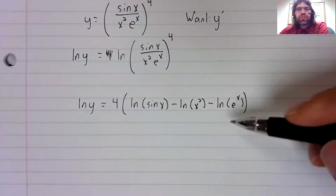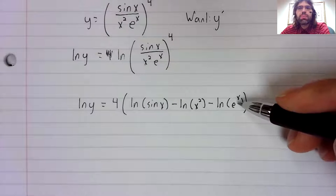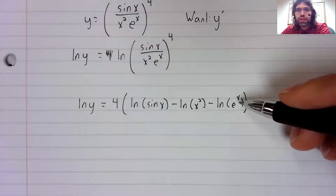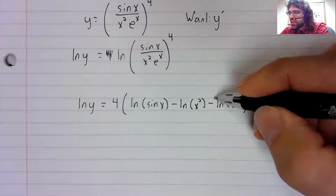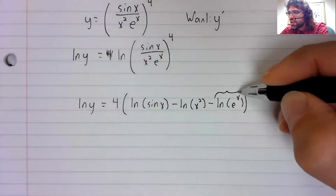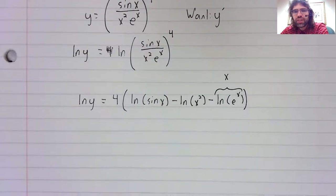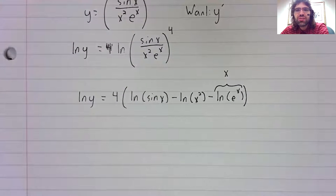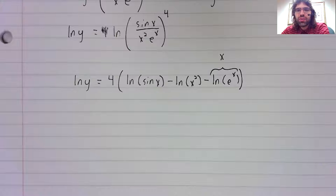We could simplify a little over here. This isn't really the point of logarithmic differentiation, but it is true that the natural log of e to the x is just x, so let's simplify this a bit.